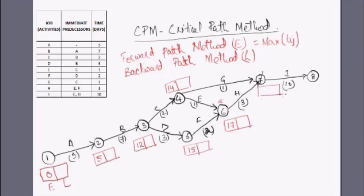At node 7: one possibility is 14 plus 1 equals 15, another is 17 plus 3 equals 20. We take 20 as it is the higher value. Finally, activity I: 20 plus 10 equals 30. It will take totally 30 days to complete the project — this is the project flow time, obtained using the forward pass method.